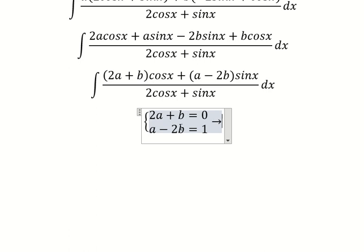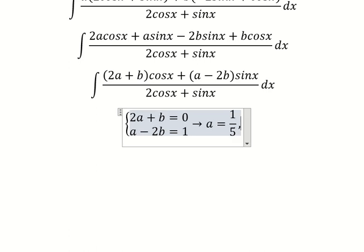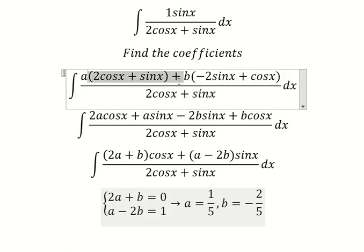Now we need to find the solutions. a equals 1/5 and b equals -2/5. So we put these values in here.